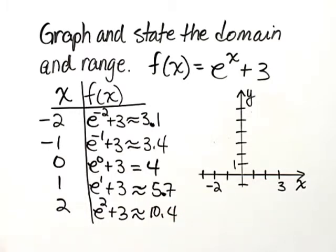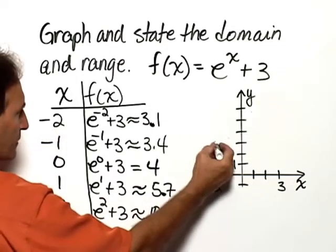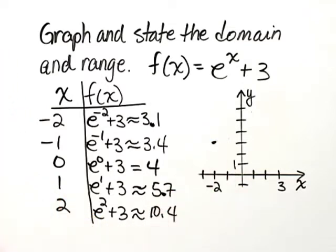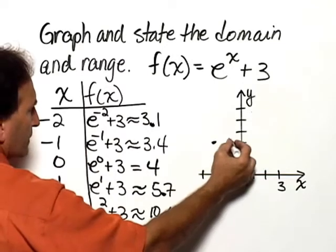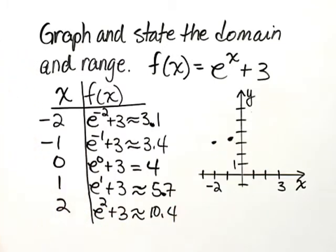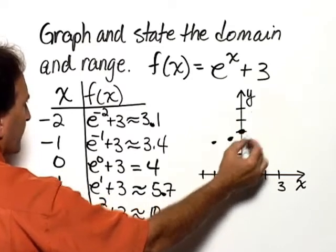Now, we can plot each of these points. For x equals negative 2, y is equal to approximately 3.1. For x equals 0, y is equal to 4.